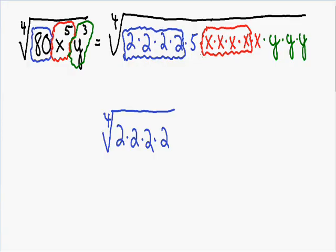Now I'm going to do the same thing with our group of x's. So we have the fourth root of one, two, three, four x's.